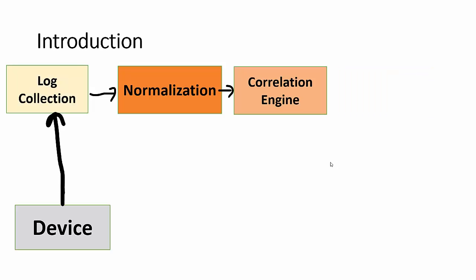The next component is the correlation engine. The rule engine expands upon the normalization of events from different sources in order to trigger alerts within the SIEM based on specific conditions in the logs. The method of writing SIEM rules typically starts off fairly simple.